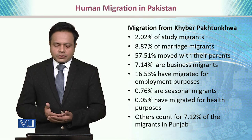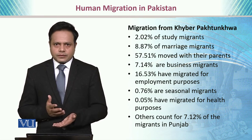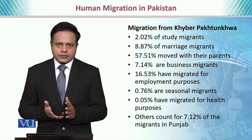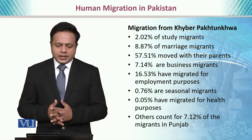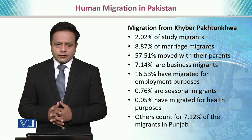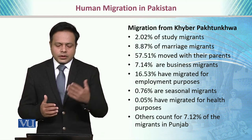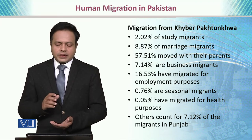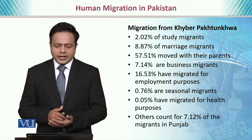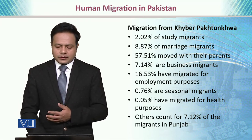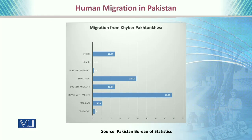Migration in Khyber Pakhtunkhwa for different purposes: 2% are study migrants, 8% to 9% are migrating after marriage, whereas a significant majority — 57% — is moving with their parents. Khyber Pakhtunkhwa has the largest community of IDPs, internally displaced people, so 57% is quite understandable. 7% are business migrants, 16% have migrated for employment purposes, and 7% are other migrants. Here is the graphical reflection of people migrating from Khyber Pakhtunkhwa for different purposes.